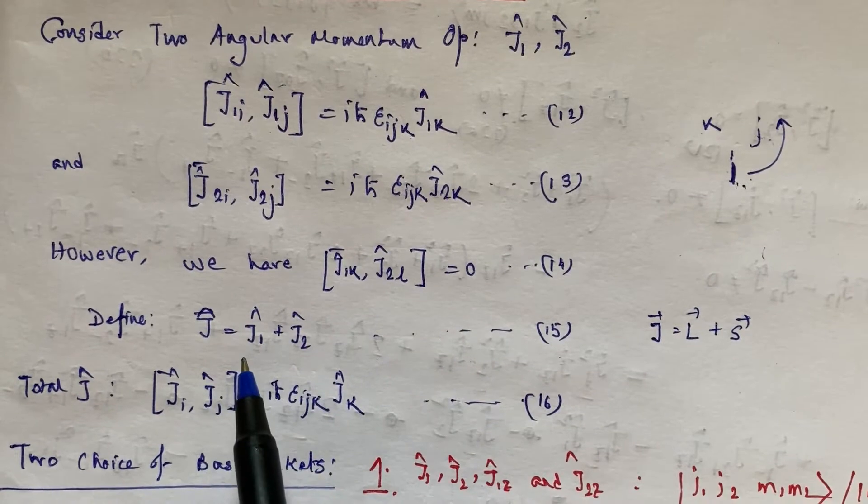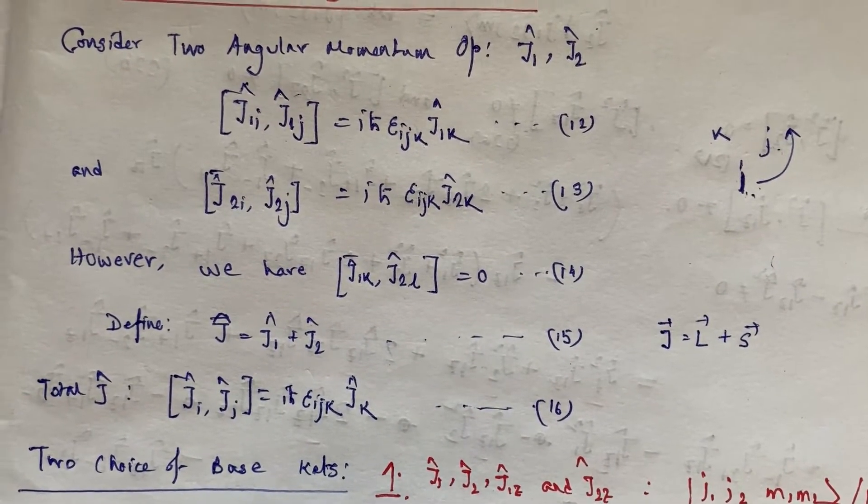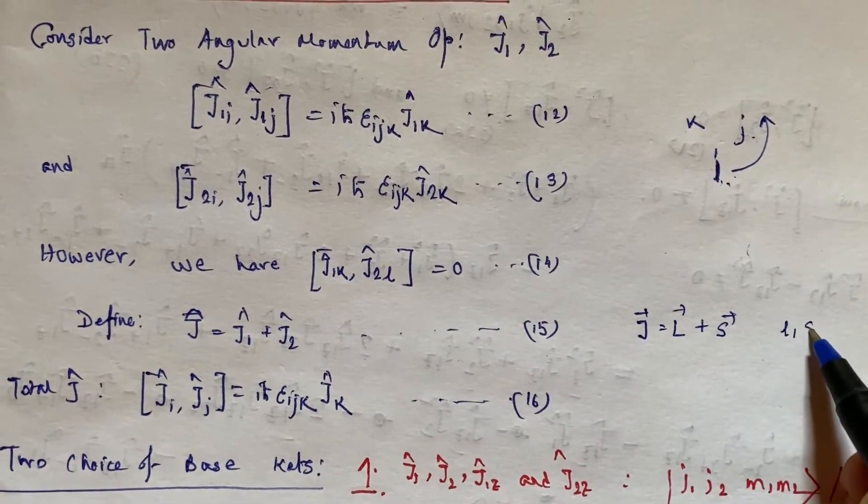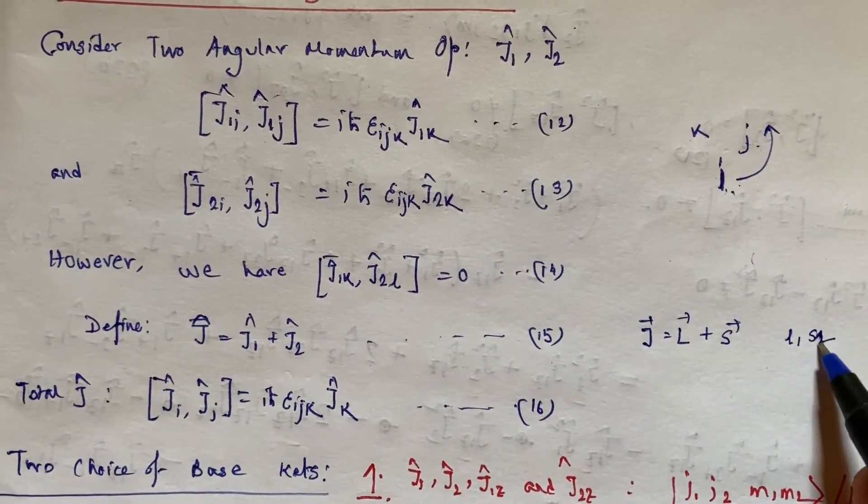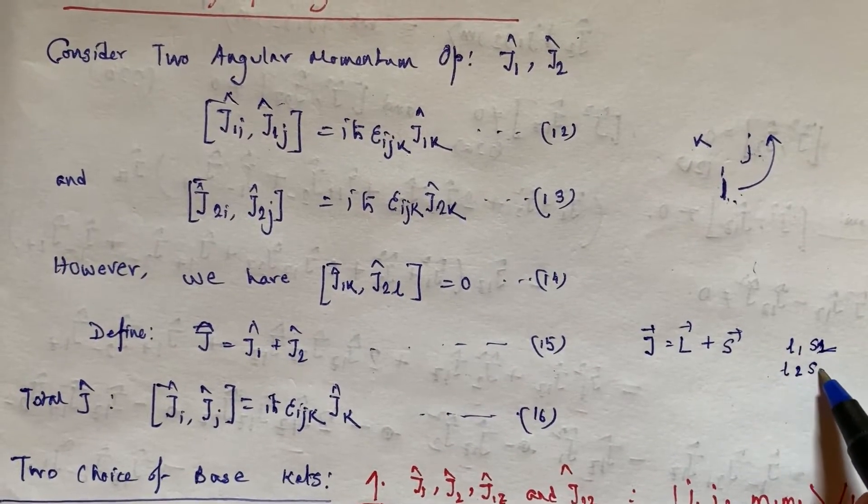For example, if we consider a system with two electrons, then for each electron there will be L₁ and S₁, and for electron 2 there will be L₂ and S₂.